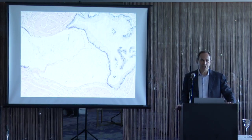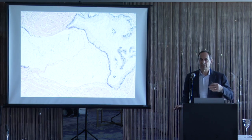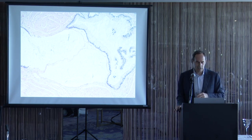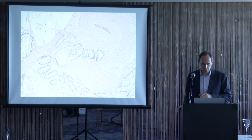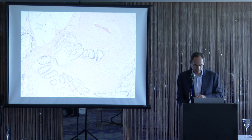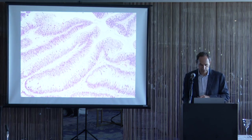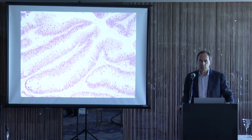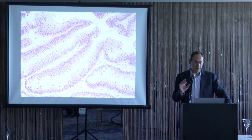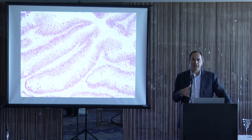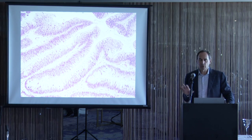Here we see intestinal metaplasia in the muscularis propria — thick muscle bundles top and bottom — but just because these glands are in the muscularis propria does not mean carcinoma. Extracellular mucin also doesn't mean cancer. Higher power shows totally bland cytology full of goblet cells. Occasionally intestinal metaplasia can get dysplastic, analogous to intestinal-type glandular lesions elsewhere.